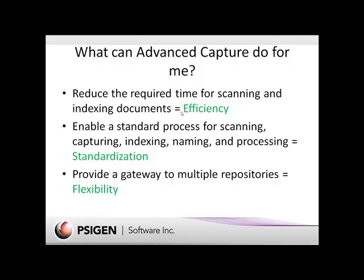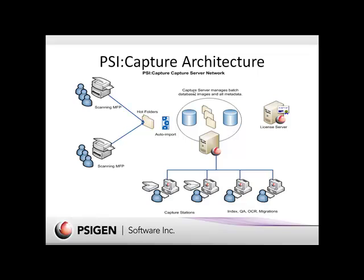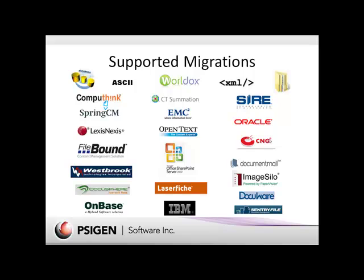What SciGen SciCapture brings to the table is this advanced capture application adds efficiency, standardization, and flexibility to the process by reducing the required time, enabling a standard capture process, and providing the ability to send images and data to multiple back-end systems. The overall architecture of the product is very flexible. It allows processing from hot folders, multiple users participating in the overall processing of documents, and the licenses are concurrent, meaning you can share a single or multiple licenses among multiple users. SciGen SciCapture supports over 40 back-end formats and document and case management systems, including Summation, World Docs, LexisNexis, plain database and network folder output, as well as Microsoft SharePoint.